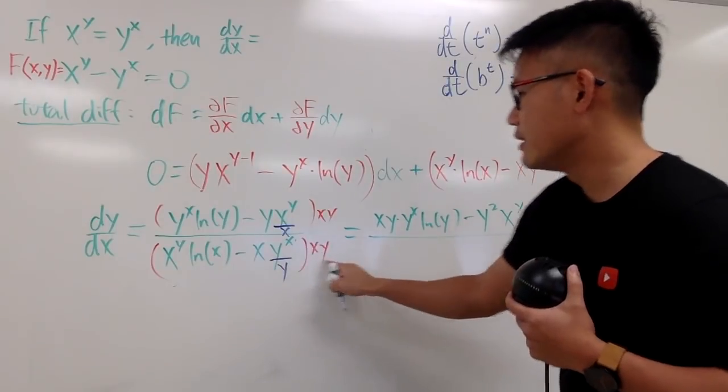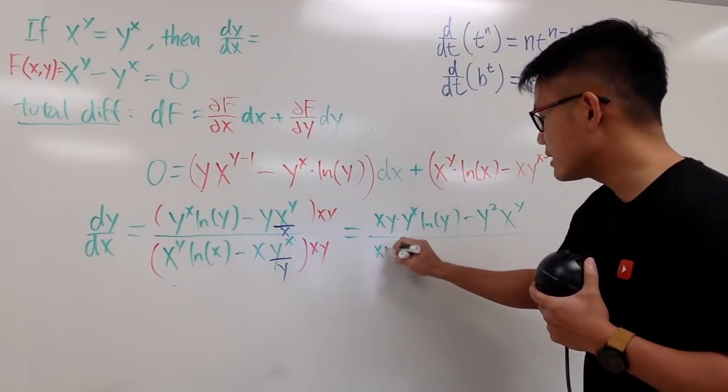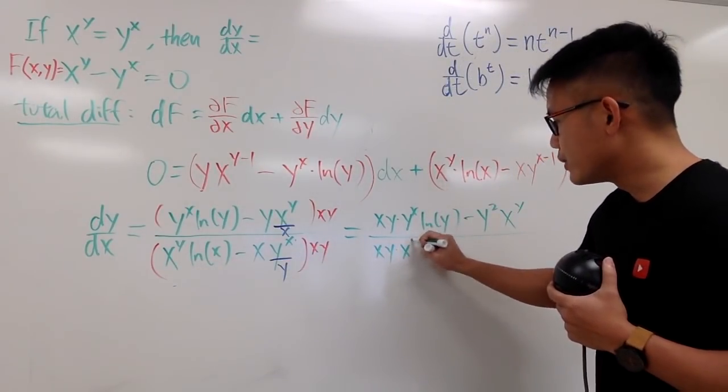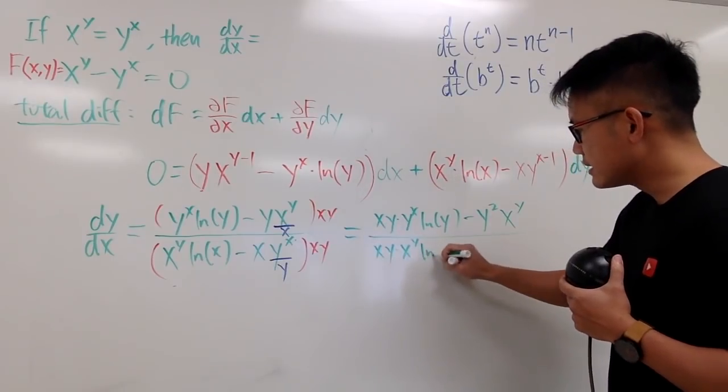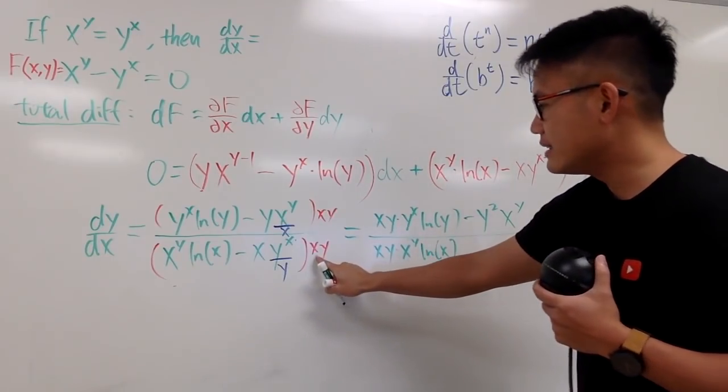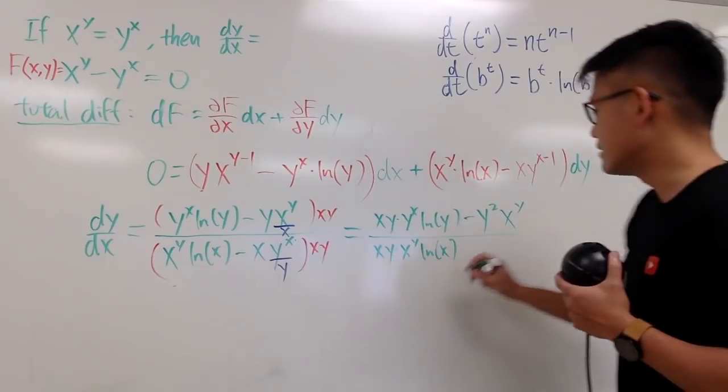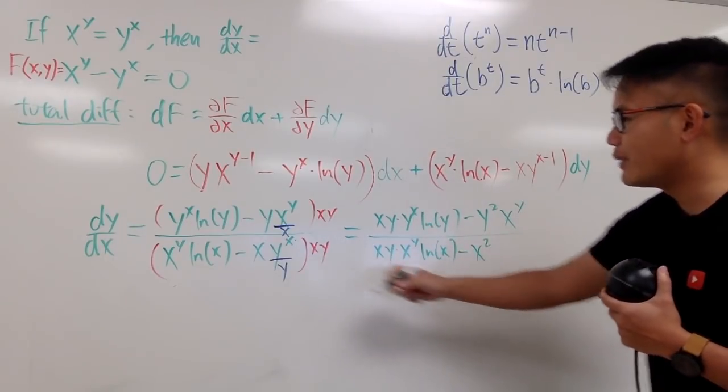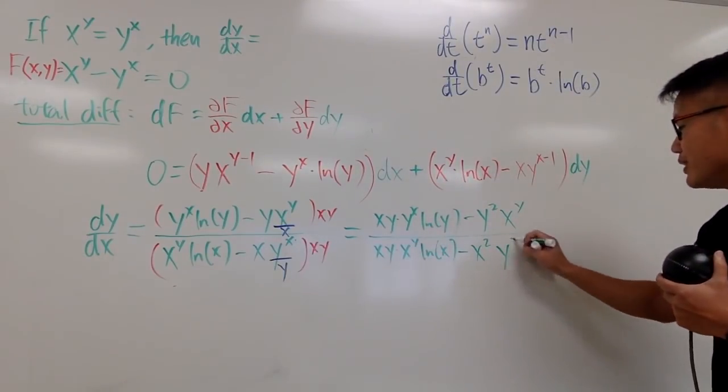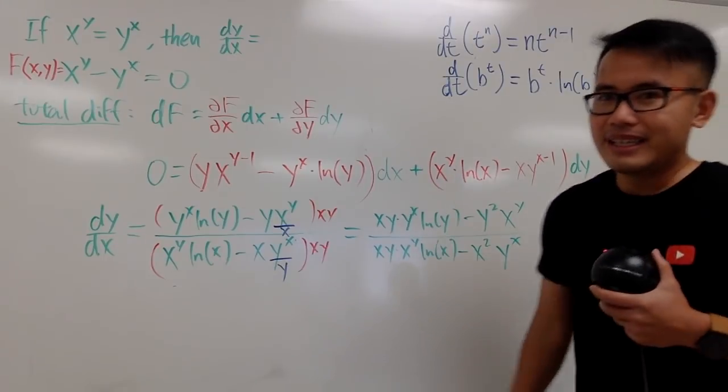Now, on the bottom, same thing. This times that, so xy times x to the y's power ln x, and y cancels out, x times x is x squared, so minus x squared, and we also have y to the x power.